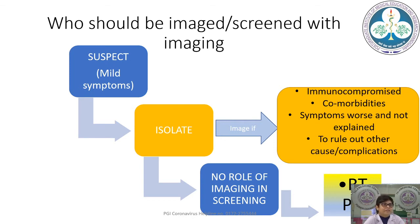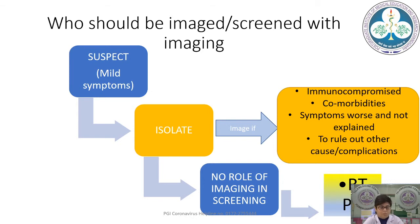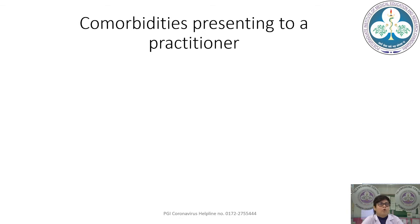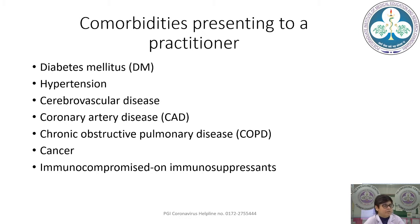Who should be screened with imaging? If a suspect has mild symptoms, the first pathway is isolation with no role for imaging; RT-PCR is the path to follow. However, we need to image if the patient is immunocompromised, has diabetes, cancer, or is on immunosuppressant drugs, has other comorbidities like hypertension or chronic liver or kidney disease, or if symptoms are getting worse or not explained by COVID-19 alone. Comorbidities include diabetes mellitus, hypertension, cerebrovascular disease, coronary artery disease, COPD, cancer, and immunosuppression.